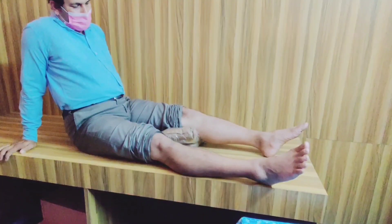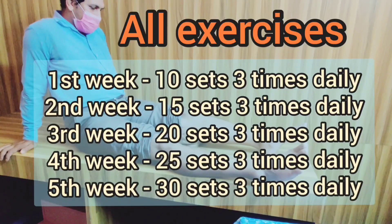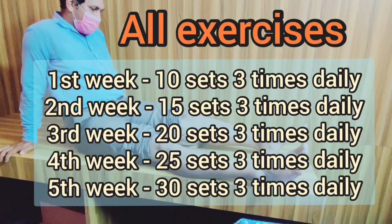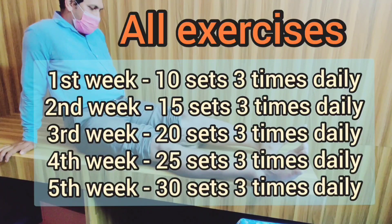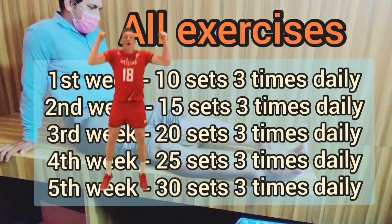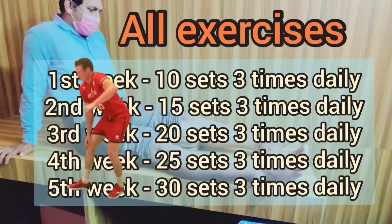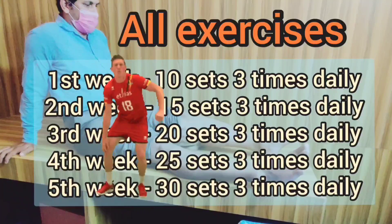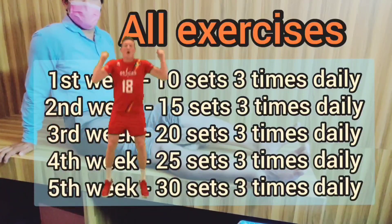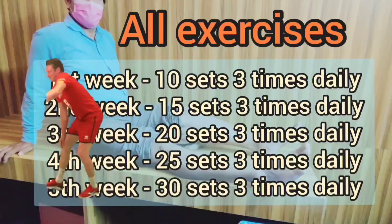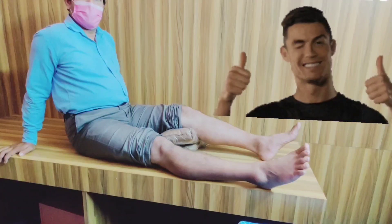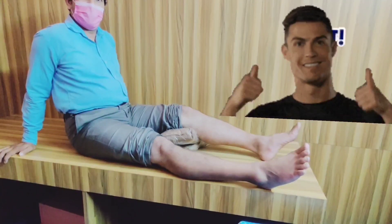All exercises should be started at ten sets three times daily. Gradually increase the number of sets by five sets per week. For example, by the end of the first week do fifteen sets three times daily, in the third week twenty sets, by the fourth week twenty-five sets, and by the fifth week thirty sets three times daily. If someone has pain while increasing, wait one week before progressing. The final target should be thirty sets three times daily, that is ninety sets per day.